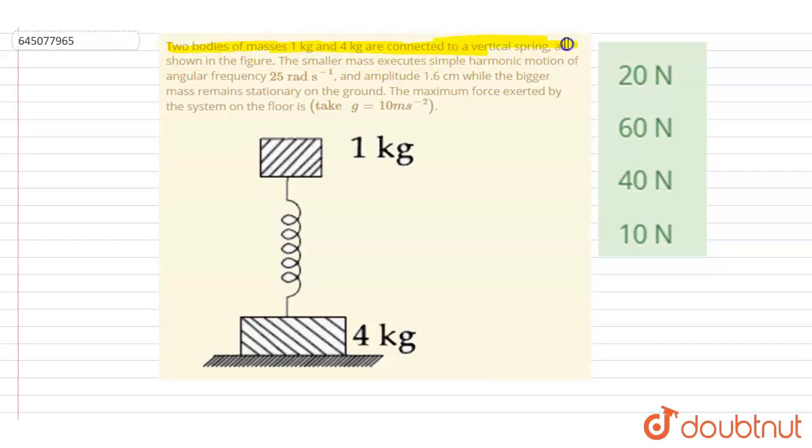Two blocks of masses 1 kg and 4 kg are connected to a vertical spring as shown in the figure. The smaller mass executes SHM of angular frequency 25 radians per second, amplitude is 1.6 centimeters. The bigger block remains stationary on the ground. Find the maximum force exerted by the system on the floor.